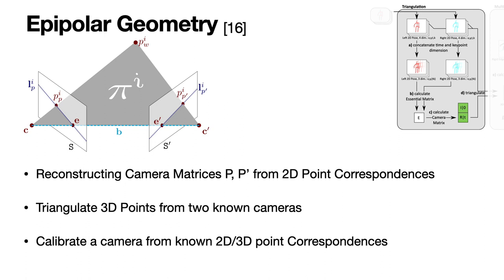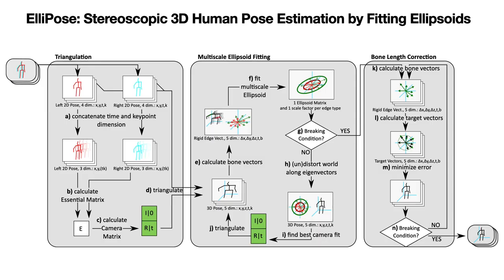Most parts of our algorithm are based on epipolar geometry. Epipolar geometry describes the correspondences between 2D points on images from different angles, 3D world coordinates, and camera parameters. These can be used to reconstruct camera matrices from 2D point correspondences, triangulate 3D points from known cameras, or calibrate a camera from known 2D and 3D point correspondences.